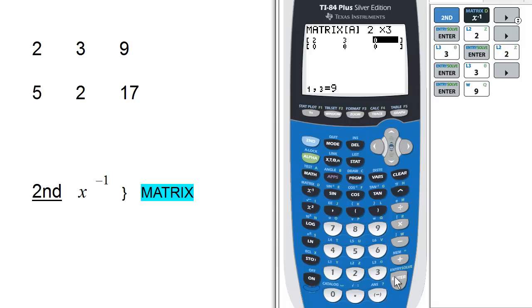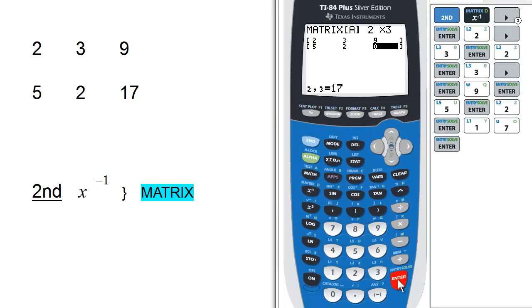9, Enter. 5, 2, 17, Enter. Now this feature that shows the element label as you enter them is quite helpful, especially when you're entering larger matrices.